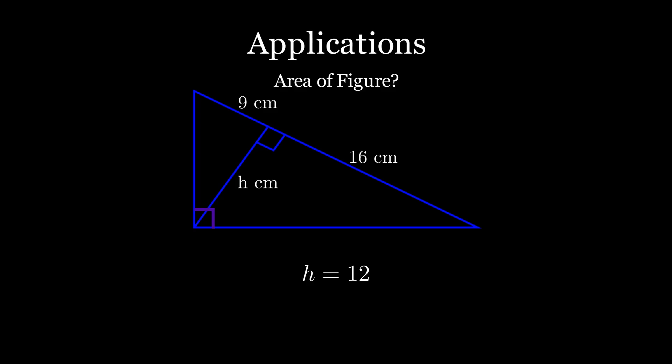So the altitude h is just 12 centimeters. Then we can easily calculate the area of the triangle, which is 150 square centimeters. It's so simple.